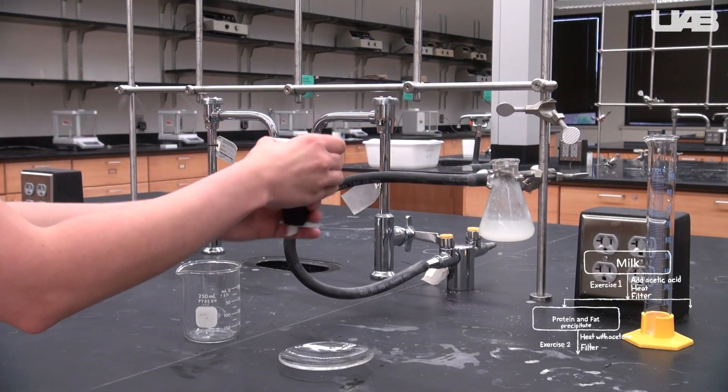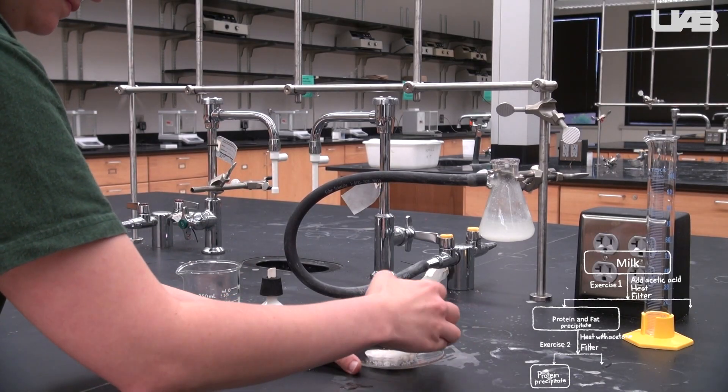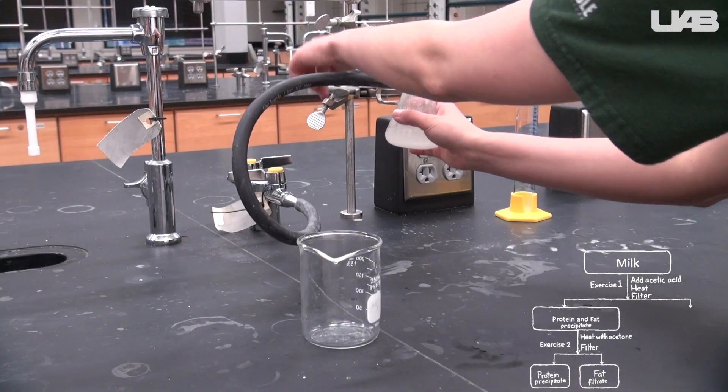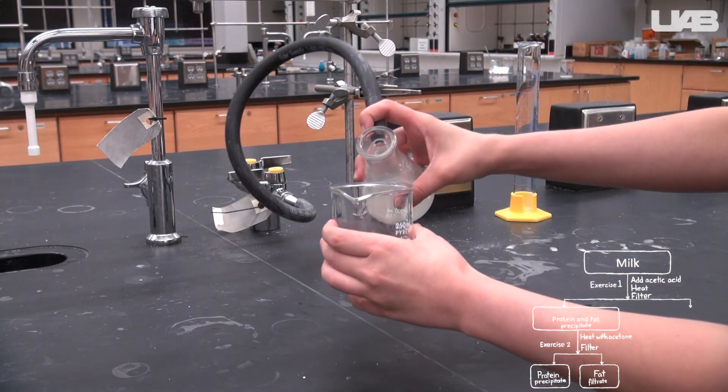Snap off the top part of the funnel and flip out the solid onto a watch glass. Peel off the filter paper. Remove the flask from the clamps. Use caution during this part because the rubber tubing can easily tip the flask over.